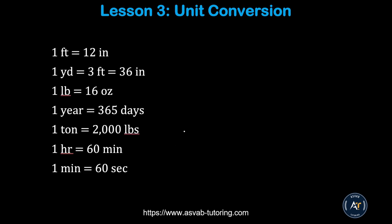There are a few unit conversions you need to know: 1 foot equals 12 inches; 1 yard equals 36 inches equals 3 feet; 1 pound equals 16 ounces; 1 year equals 365 days; 1 ton equals 2,000 pounds; 1 hour equals 60 minutes; 1 minute equals 60 seconds. Most of these you already know, but here is a refresher.